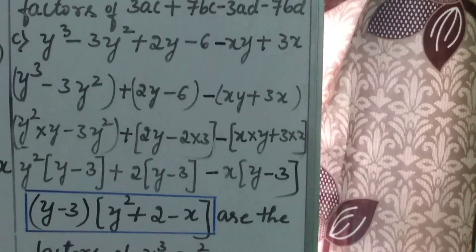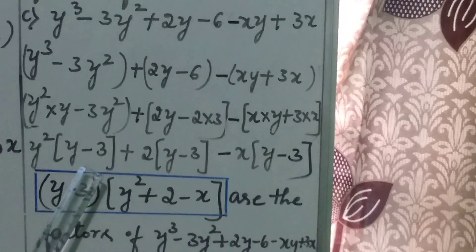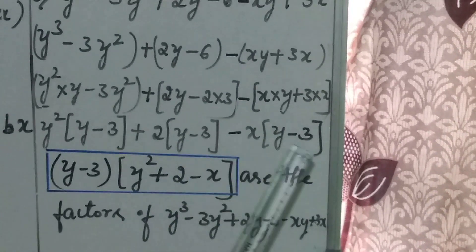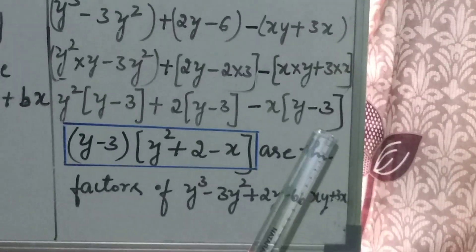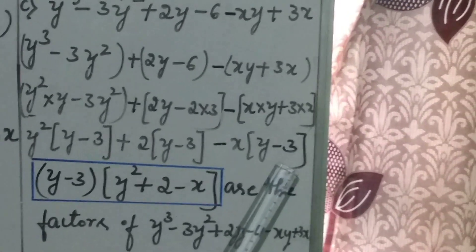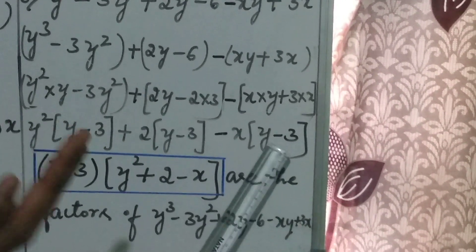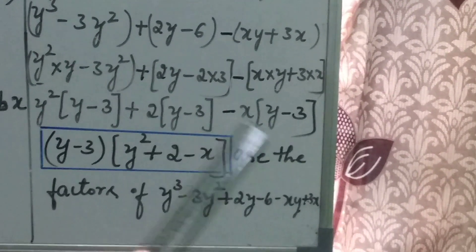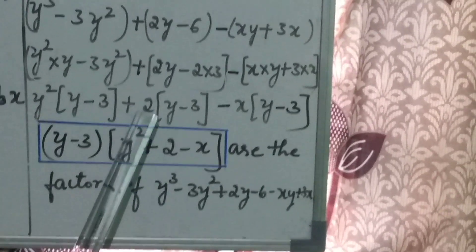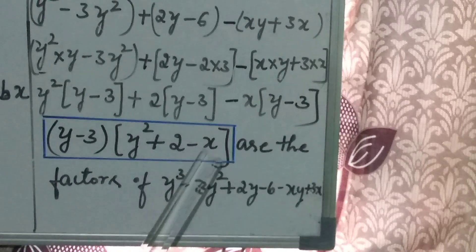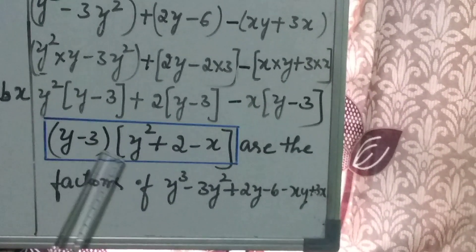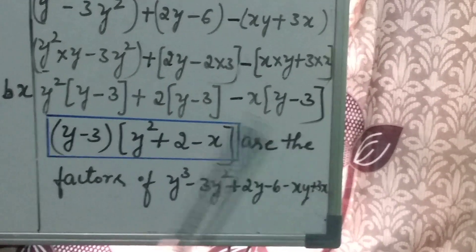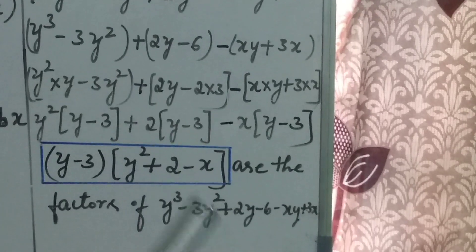Observe carefully — across all 3 terms, which is the common factor? y minus 3 is common in the first term, y minus 3 is common in the second term, and y minus 3 is common in the third term. Therefore, using the first method of factorization, taking y minus 3 outside the bracket, the remaining terms are y square from the first term, plus 2 from the second term, minus x from the third term. Therefore y minus 3 into y square plus 2 minus x are the factors of the given algebraic expression.